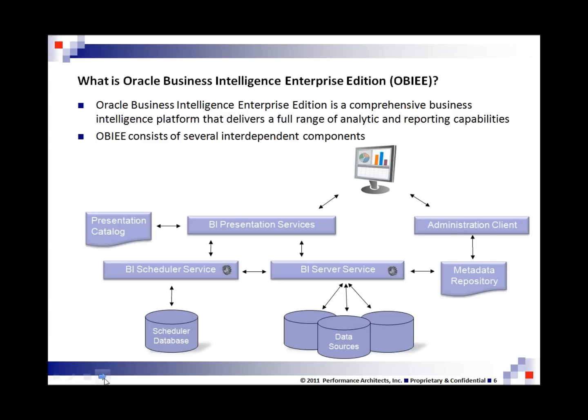It's also an abstraction of your physical data as well. The second component of Oracle Business Intelligence is the BI presentation service. The BI presentation service is a web engine that wraps data it receives from the BI server service in XML and HTML, and then sends it to your internet browser for viewing. The BI presentation service works with an XML repository, which is called the presentation catalog. The web catalog contains information about reports and dashboards, which we will cover in an upcoming section.